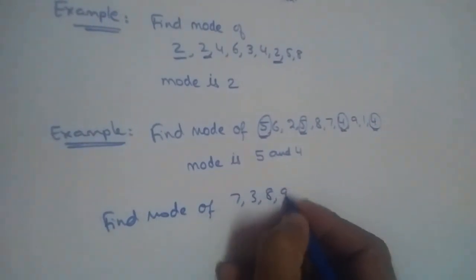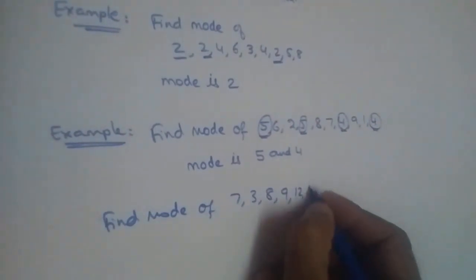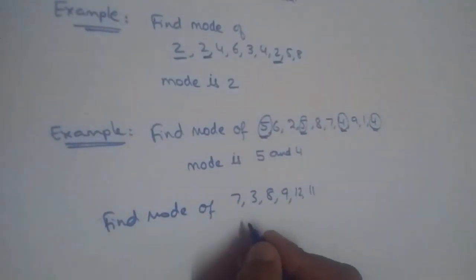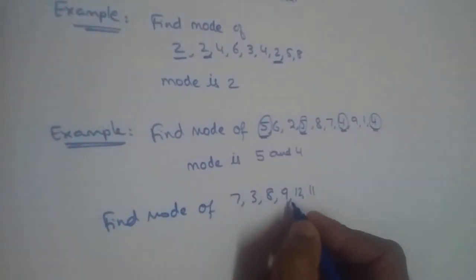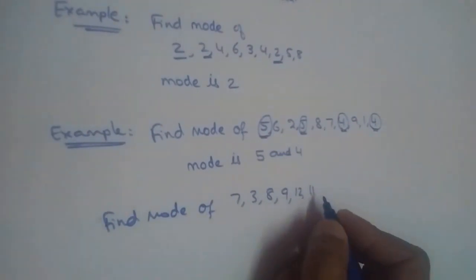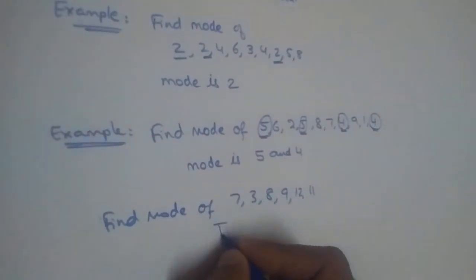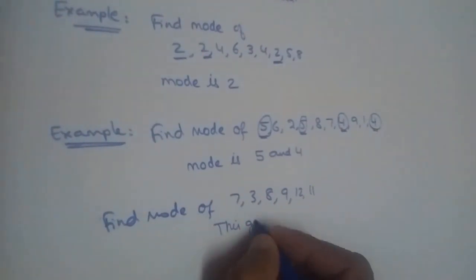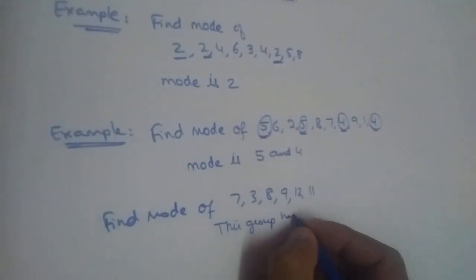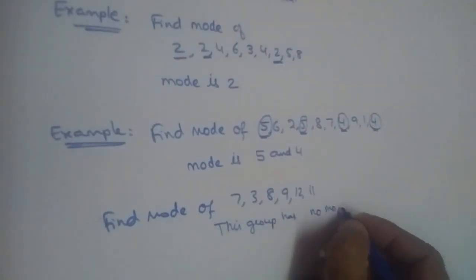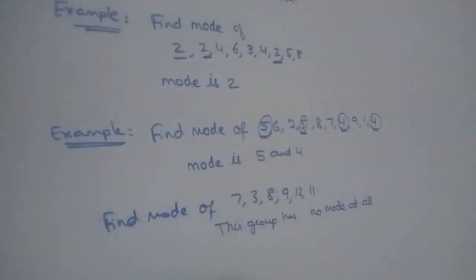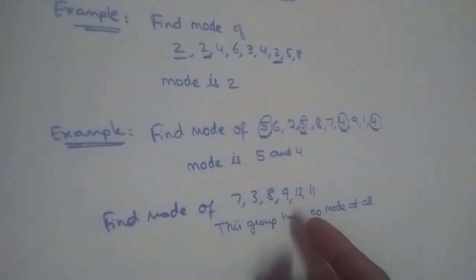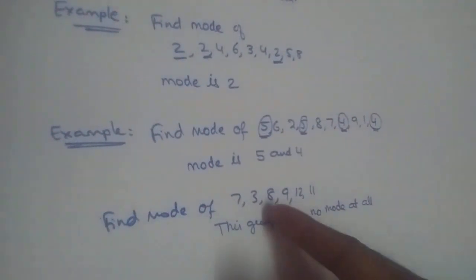Find the mode of 7, 3, 8, 9, 12, 11. Here 7 occurs once, 3 once, 8 once, 9 once, 12 once, and 11 once. So this group has no mode at all, because all the numbers appear only once.